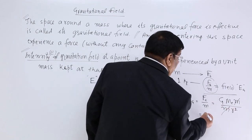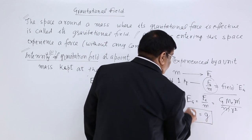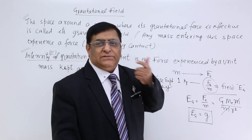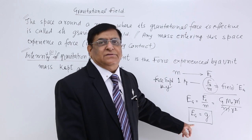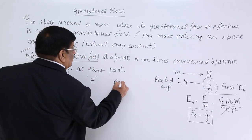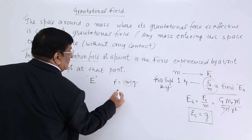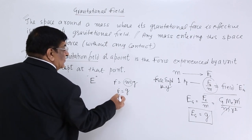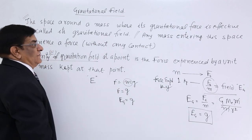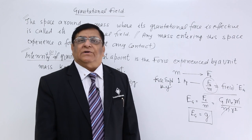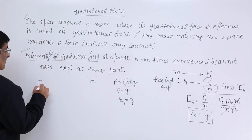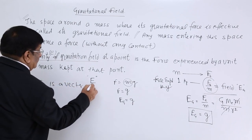This formula GM over R squared belongs to acceleration due to gravity. So gravitational field at a point is numerically equal to acceleration due to gravity at that point. We know that force equals Mg; if you make it 1 kg, then force is numerically equal to g, and that force per unit mass is the gravitational field. So gravitational field equals g. Field is a vector quantity because gravitational field is essentially a force, and force is a vector quantity. Therefore, gravitational field is a vector quantity.